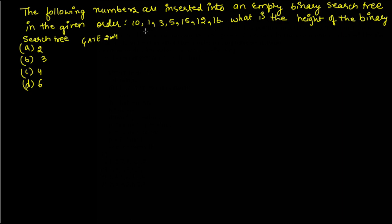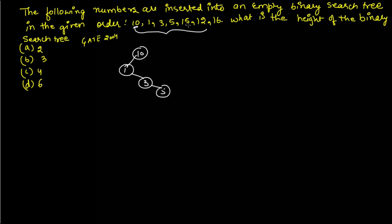This question was asked in GATE 2004. The following numbers are inserted into an empty binary search tree in the given order. Building the tree: first 10 is the root, then 1 goes left, then 3 goes right of 1, then 5 goes right of 3, then 15 goes right of 10, then 12 goes left of 15, and then 16 goes right of 15.